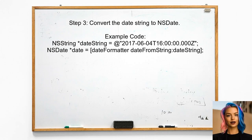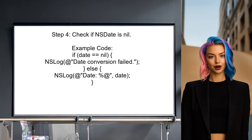Now, the user can convert the date string into an NSDate object. This is done by calling the DateFromString method on the NSDateFormatter instance. Finally, the user should check if the NSDate object is not nil. If it is nil, this indicates that the date string could not be parsed correctly.